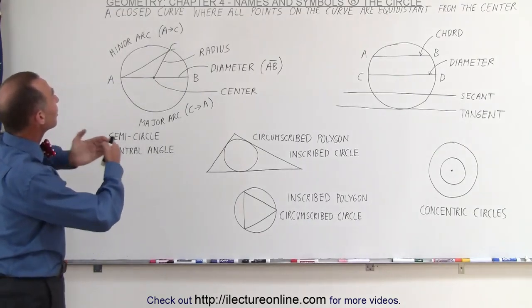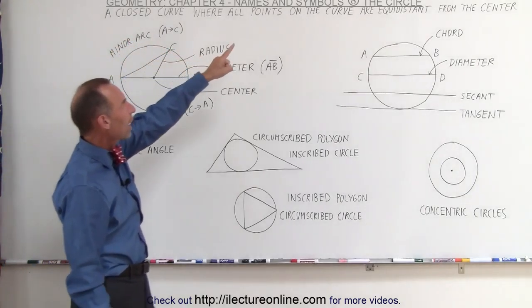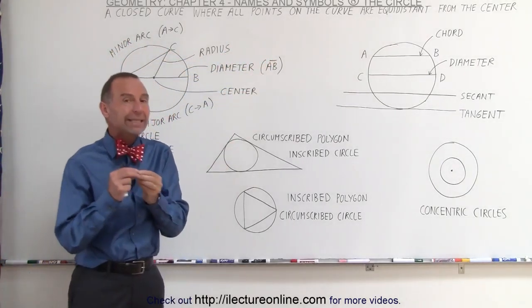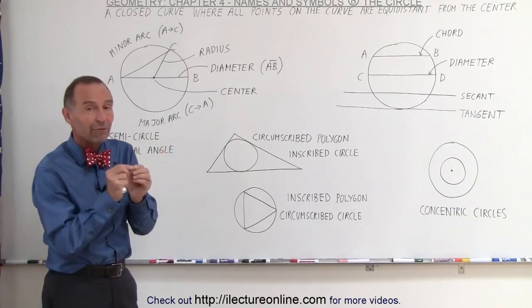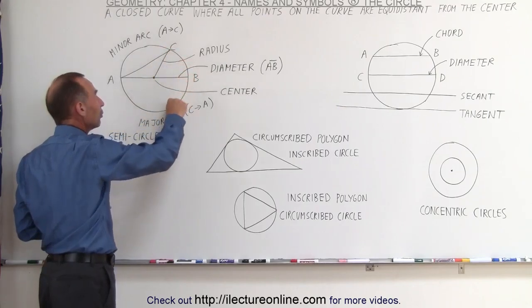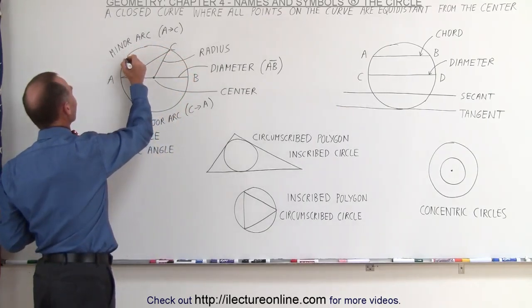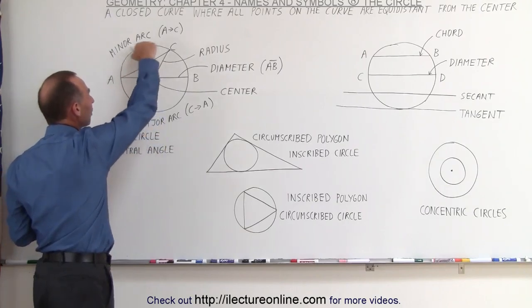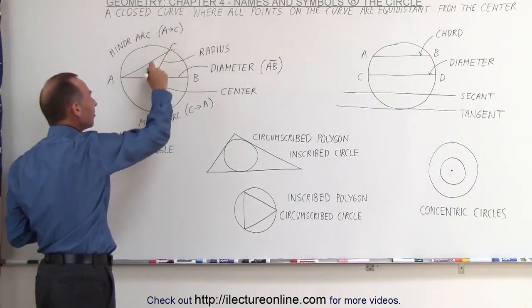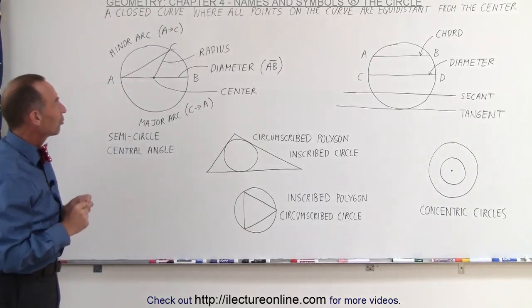Well, first of all, the definition is that it's a closed curve where all the points on the curve are equidistant, meaning the same distance from the center. So we pick a center point and all the points on the curve are the same distance. All the points on the circle are the same distance away from that central point, and that's the definition of the circle.